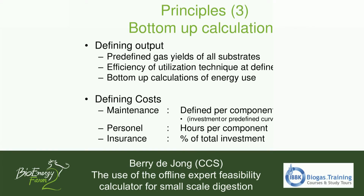We have predefined gas yields for every substrate, which are in the tool. If you select a certain substrate, it will produce a certain amount of gas per kilogram of dry matter or organic dry matter. We also look at the capacity of certain installations — for example, the CHP — and we have defined the efficiency of the CHP for every capacity based on current standards in the market.